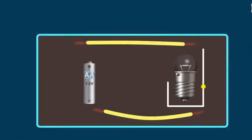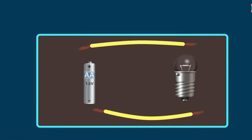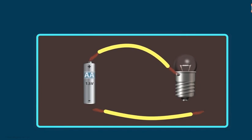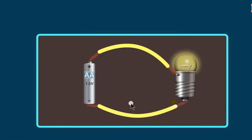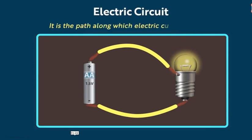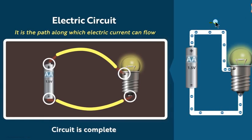Let's discuss the basic circuit which includes a bulb and a battery, along with connecting wires. When one terminal of a connecting wire is connected to the positive of the battery and the other connects to a terminal of the bulb, and the other terminal of the bulb is connected to the negative of the battery, the bulb will glow — the circuit is completed. This is called an electric circuit: it is the path along which electric current can flow. Electrons flow through the bulb through the wire because of the potential difference created across the bulb.